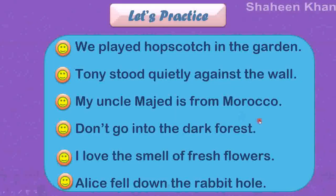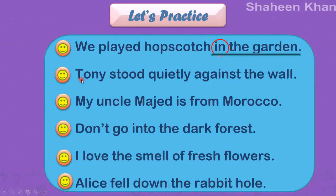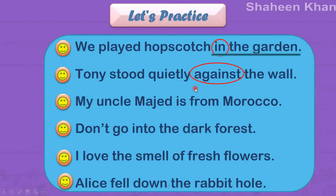Now let's practice and apply your skills. 'We played hopscotch in the garden.' What is the preposition here? It is 'in.' And the prepositional phrase? Start from the preposition and move right to the noun — 'in the garden.' Next: 'Tony stood quietly against the wall.' Where did he stand? Against the wall. So the preposition is 'against,' and the prepositional phrase is 'against the wall.' You're getting good at this!